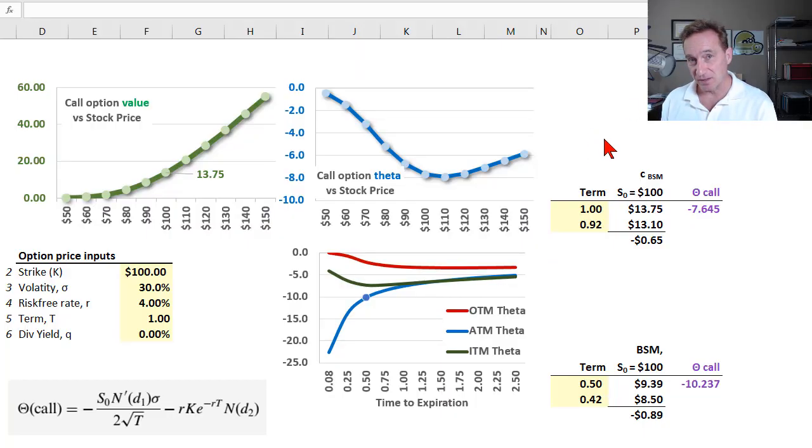Option theta is the third Greek I'm looking at that is a first partial derivative. The other two were delta and vega. So all three of these are first partial derivatives, so they are siblings and they have something in common. They are the rate of change of the option's value. That's here on the y-axis, the value or price of the option per the Black-Scholes-Merton option pricing model. These are the rate of change of the option's value with respect to, in the case of delta, the underlying asset or stock price. In the case of vega, it was with respect to the implied volatility. And now in the case of theta, it's with respect to the passage of time.